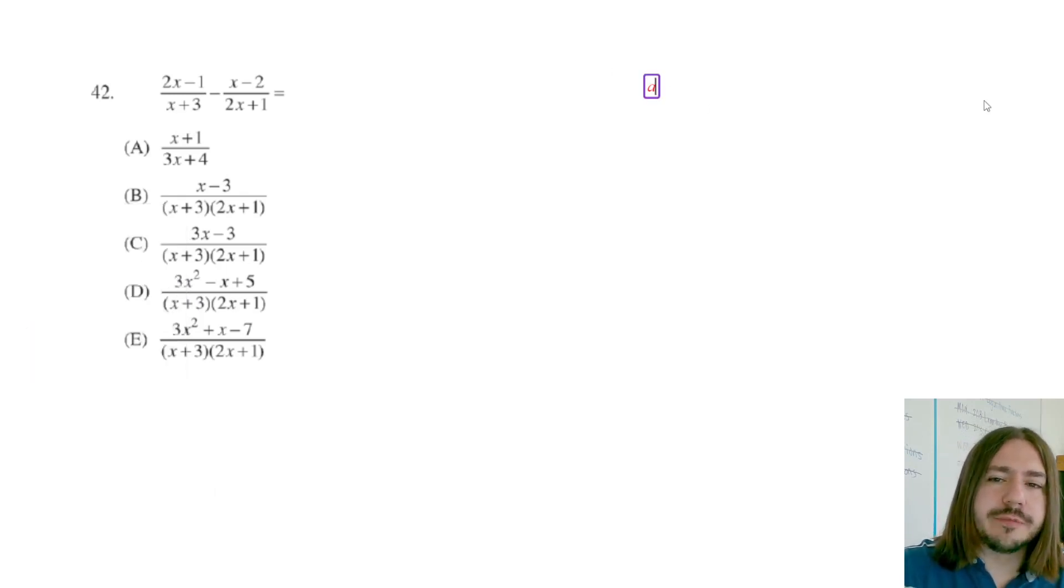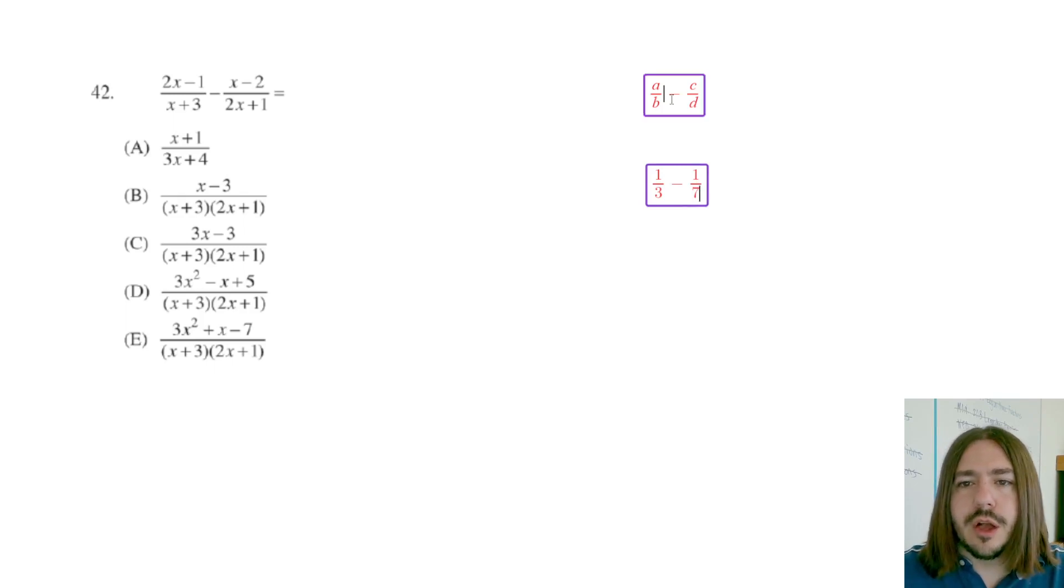So let's say we just have generically A over B minus C over D. So there's two plain fractions. And I'll show you a little example here. Let's say we had like one third minus one seventh.